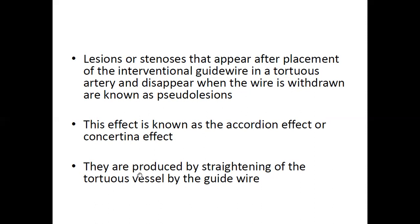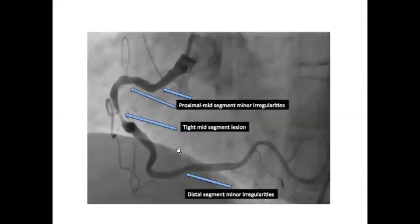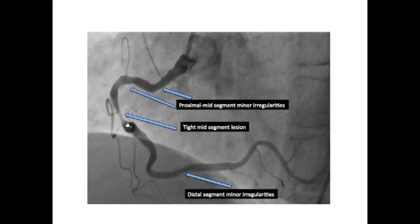They are produced by straightening of the tortuous vessel by the guide wire. Here is an example of a concertina effect. This is from a normal routine coronary angiography — you can see this is a right coronary artery. The mid segment is tortuous, and there is a tight mid-segment lesion when compared to the proximal and distal portions, which show only mild irregularities.